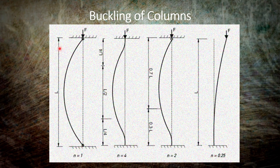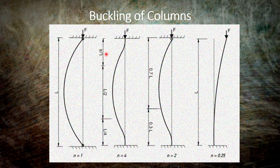Failure of long cylindrical columns under compressive load is called buckling. The peak load at which buckling is produced in columns is called the critical buckling load.